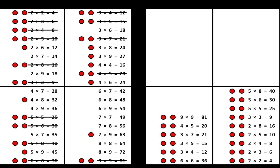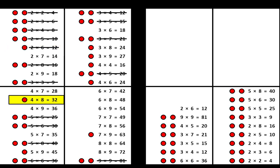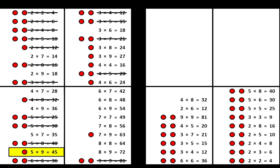Now let's move to the equations with one dot. Notice that there is still more space in the current box to write some of those equations. Find the equations with one dot — in this example, write each one on the new list and cross it off. You can see that filling up a box means moving to the next one.